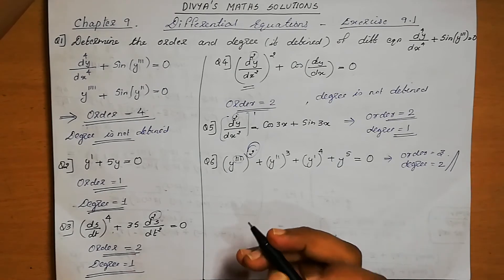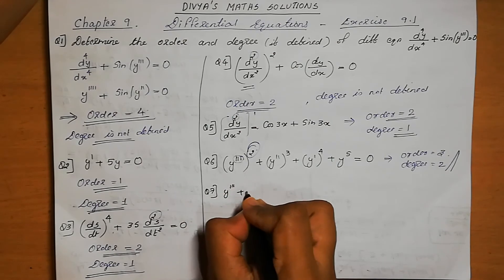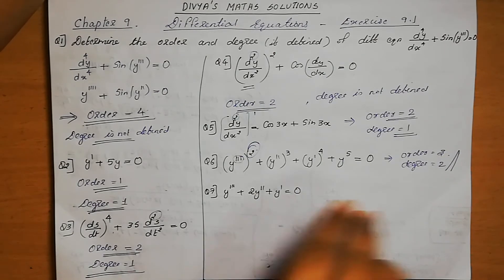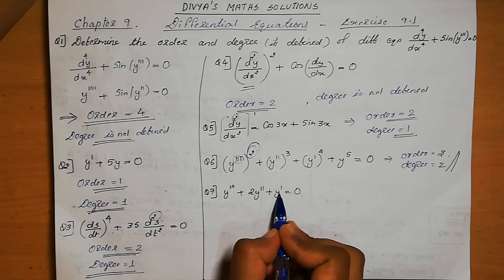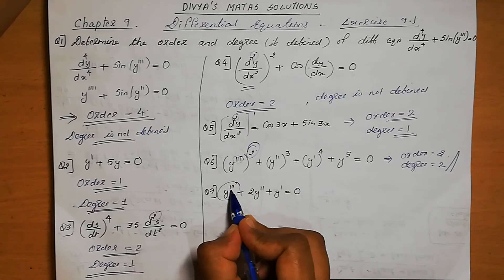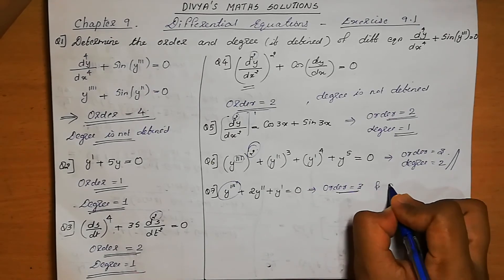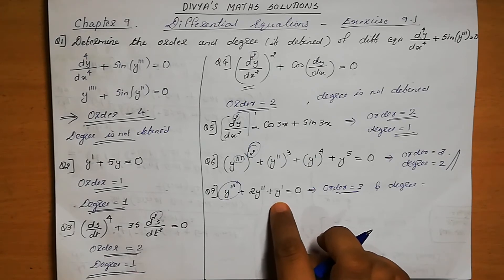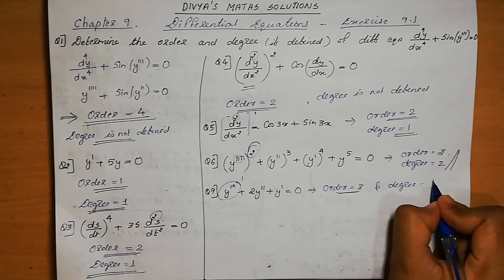Question number 7: y''' + 2y'' + y' = 0. The highest order derivative present is y''', so the order is 3. This is in the form of a polynomial equation. The power of y''' is 1, so the degree equals 1.